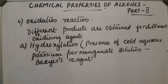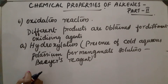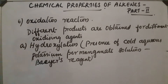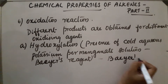Hydroxylation means addition of water and oxygen. The product obtained is a 1,2-diol, also called a vicinal glycol. This is an important test for unsaturation. When the vicinal glycol product is formed, the purple color of the potassium permanganate solution decolorizes. This color change identifies the presence of a double bond in an unknown compound. This test is called Bayer's test.